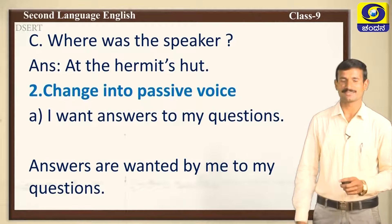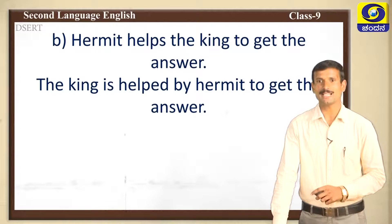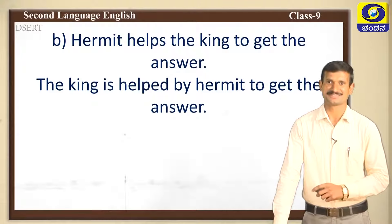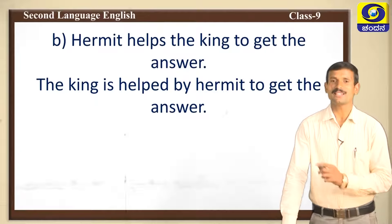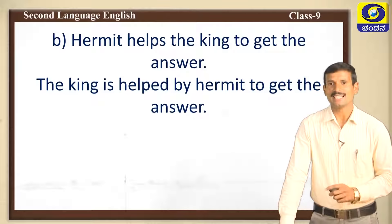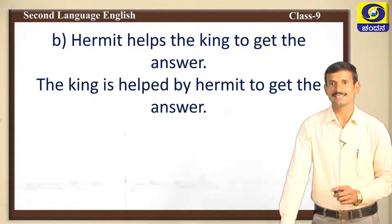Now the second sentence: 'Hermit helps the king to get the answers.' Subject is 'hermit,' verb is 'helps,' and 'the king' is the object. Object moves to subject place. The king is a singular noun, so we use 'is.' 'Helps' is verb 1 — it changes to verb 3 form: help → helped. The passive sentence is: 'The king is helped by hermit to get the answers.'